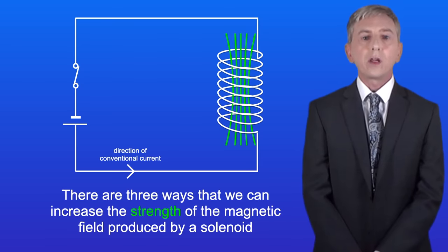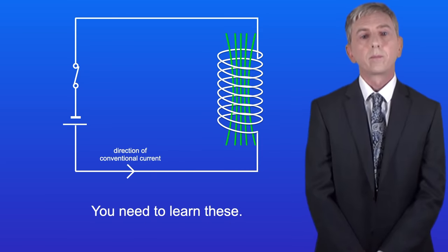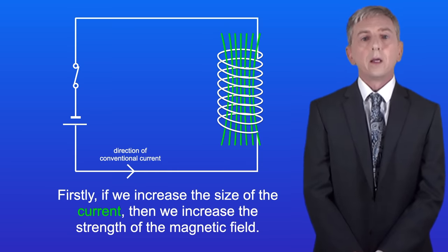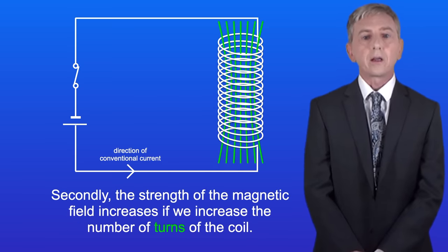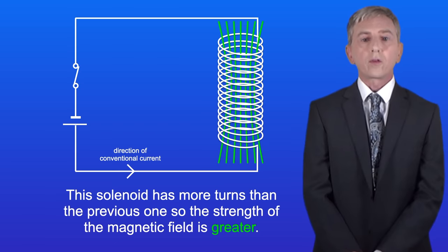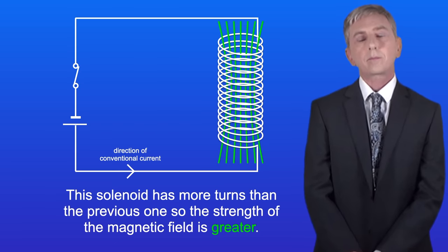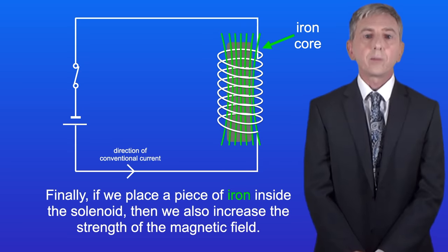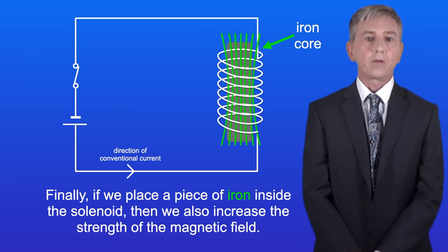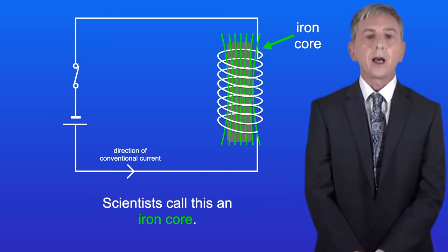There are three ways we can increase the strength of the magnetic field produced by a solenoid and you need to learn these. Firstly, if we increase the size of the current then we increase the strength of the magnetic field. Secondly, the strength of the magnetic field increases if we increase the number of turns of the coil — this solenoid has more turns than the previous one so the strength of the magnetic field is greater. And finally, if we place a piece of iron inside the solenoid then we also increase the strength of the magnetic field. Scientists call this an iron core.